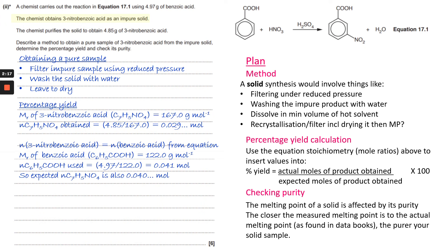The percentage yield: let's have a think about this. So first of all, the Mr of three nitrobenzoic acid, which is C7H5NO4. So what I've done is I've counted up all of the carbons, oxygens, nitrogens and hydrogens here.